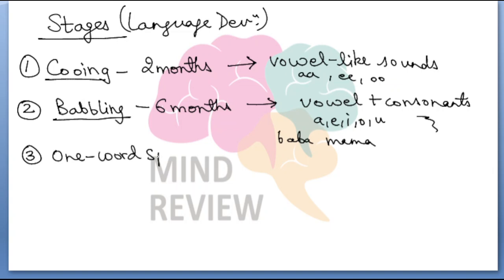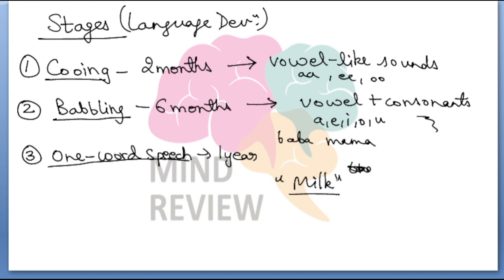Then there is one-word speech, when the child is around one year of age. Here the child can actually begin to say actual words that we also use — for example, 'milk'. The child actually wants to say 'I want milk', but since they are not yet aware of complete grammar rules, they might just say one word: 'milk'. This is why it is called one-word speech — the child says only that one word, and you as the listener have to understand the entire intended sentence from that single word.